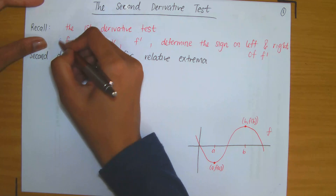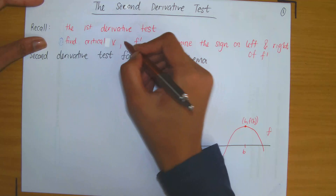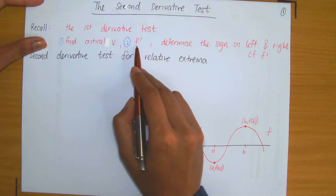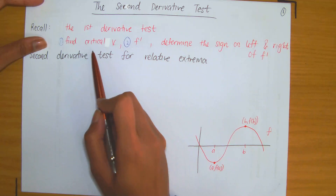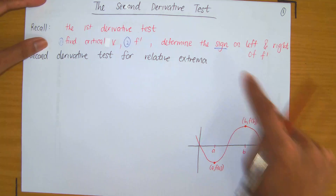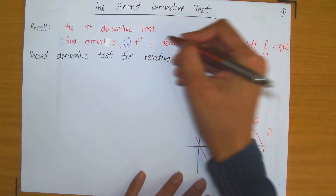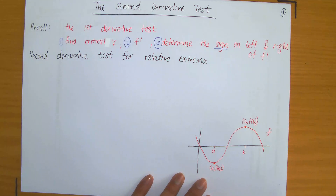You needed to find the critical values of the function. Thereafter you needed to compute the first derivative, as said in the name. Once you've computed the first derivative, you then needed to evaluate the first derivative on the left and the right of each critical value and determine the sign — either positive or negative. Based on the signs obtained, we could then interpret if the given critical value would result in a relative maximum, a relative minimum, or neither.